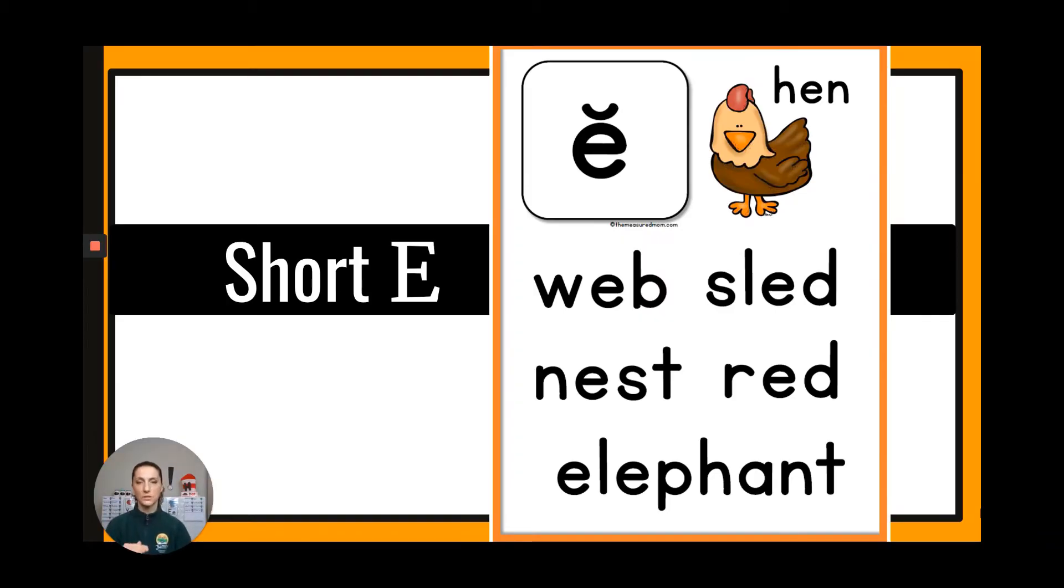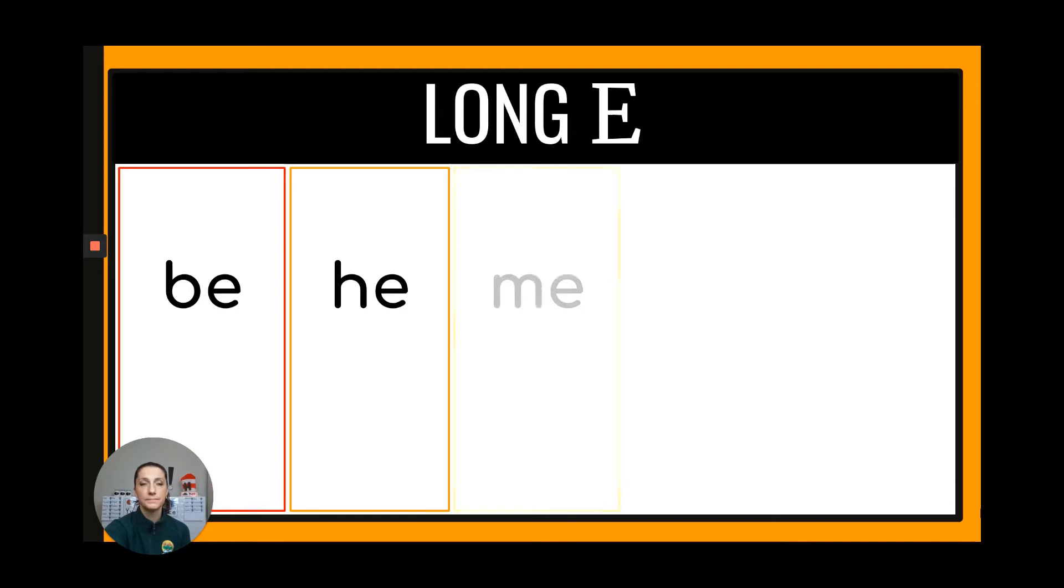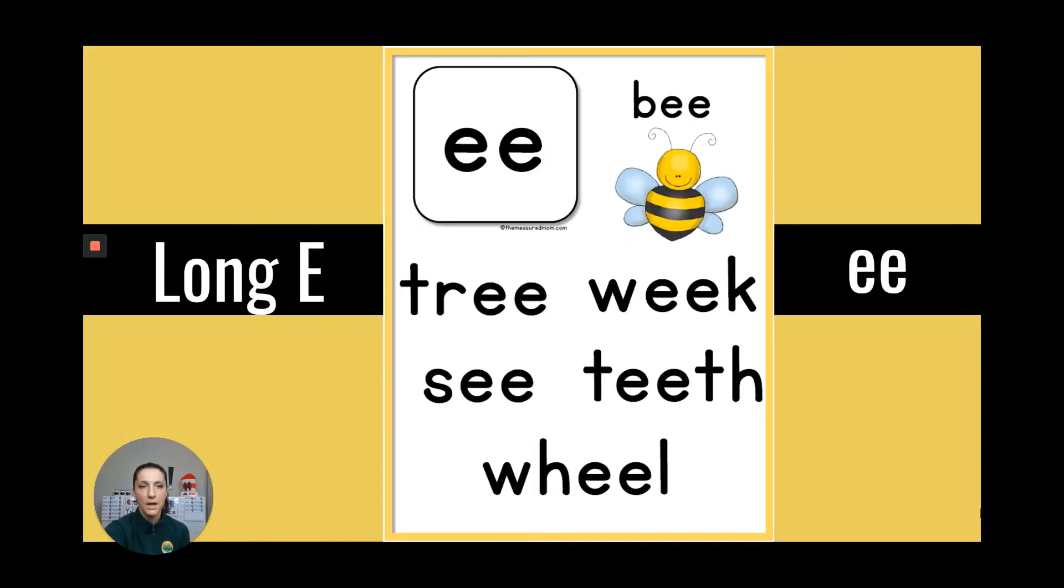So let's start with the short sound of E just to remember what we're talking about. The short sound of E sounds like eh, like hen, web, sled, nest, red, and elephant. Now if we change it to the long sound of E, it sounds like the name of the letter, just like E. So we can make that sound just using simply the letter E. We have be, as in I want to be an astronaut. He, me, she, and we.